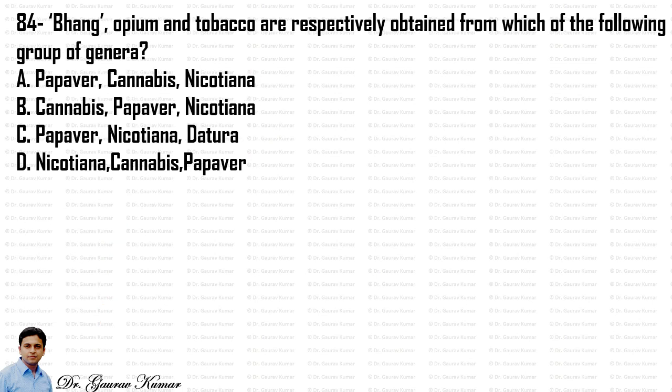Bhang, opium and tobacco are respectively obtained from which of the following group of genera? Bhang is obtained from Cannabis, opium is obtained from Papaver somniferum, and tobacco is obtained from Nicotiana. So the answer is B — Cannabis, Papaver and Nicotiana.